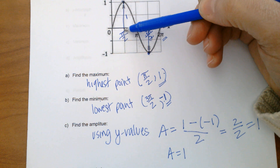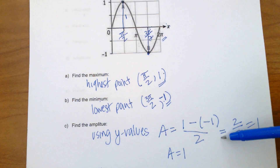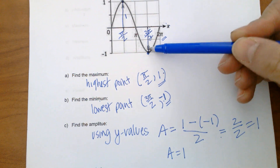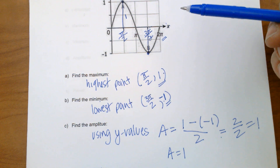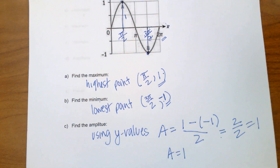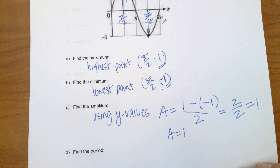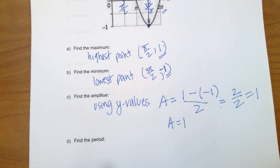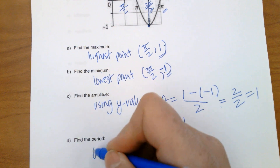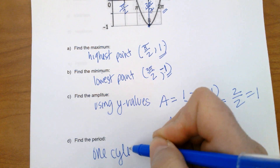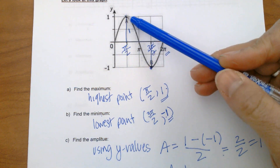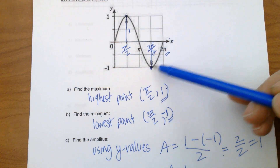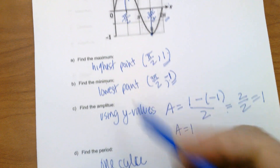We could find this without even using the formula, but formulas are always nice because you never know where a graph ends up — you may just need to use the points. And find the period — that's how long one cycle takes. We start at zero, hit a maximum, then minimum, and back — so it's two pi.